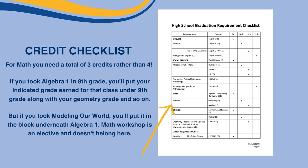For math, you'll need a total of three credits rather than four. The same rules apply, but if you did Algebra 1 in eighth grade, you'll put your indicated grade earned for that class under ninth grade along with your geometry grade and so on. If you took Modeling Our World, you'll put it in the block underneath Algebra 1. Math Workshop is an elective and it doesn't belong here.